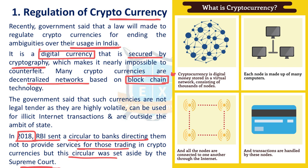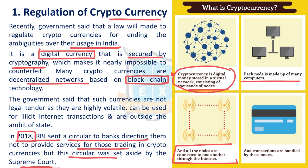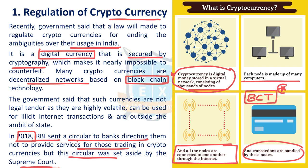Let us briefly understand what cryptocurrency is. Cryptocurrency is digital money stored in virtual networks consisting of thousands of nodes. Each node is made up of many computers. All the nodes are connected to one another through the internet, and transactions are handled by each of these nodes. Transactions happen through blockchain technology. Information is sent in the network to all the nodes, and each node validates it — a block of information is added to every node, which we call a ledger. A ledger is a database to which the block of information gets added. When all these nodes validate, only then does the transaction happen.